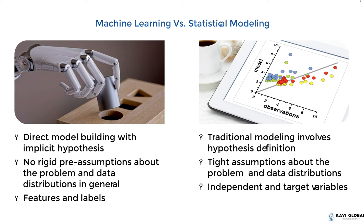Some terms to familiarize yourself with: those who have worked on statistical modeling traditionally would know about independent variables and target variables. Within the machine learning world, we call them features and labels. Features are the independent variables, and labels are the dependent variables which we are going to predict. You will hear a lot of words about features, labels, and data frames.